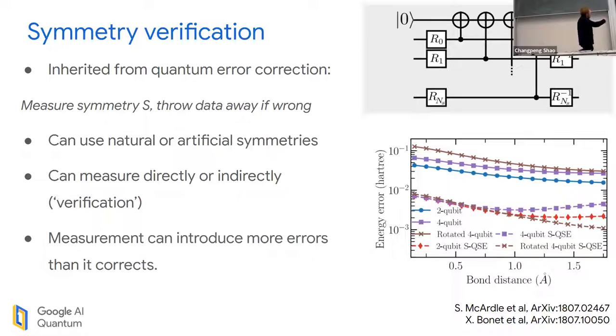The reason we call it verification - you can do the post-selection either directly or indirectly. The circuit I have up here is how you do a direct measurement of any Pauli symmetry. That's incredibly costly if you're on a quantum computer. So what people tend to do is they can cheat. You can actually just read out all of your qubits and do the verification post-processing.